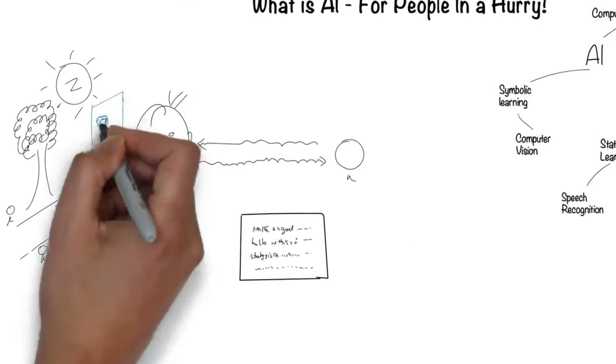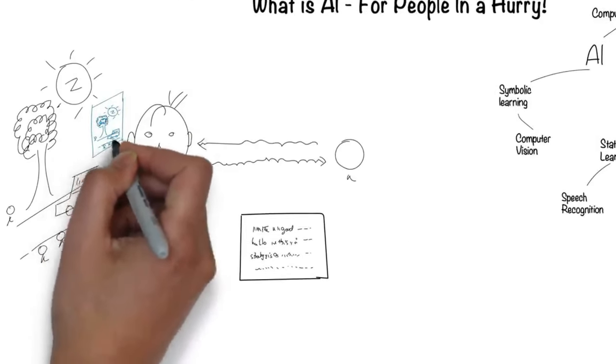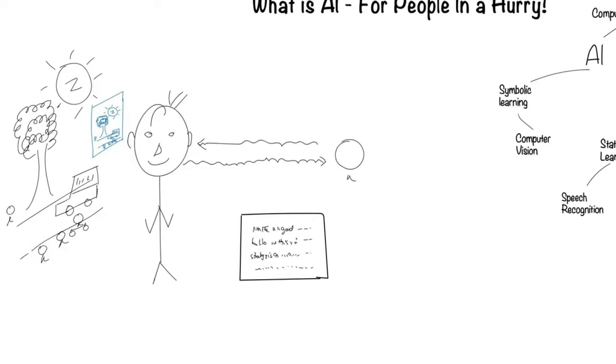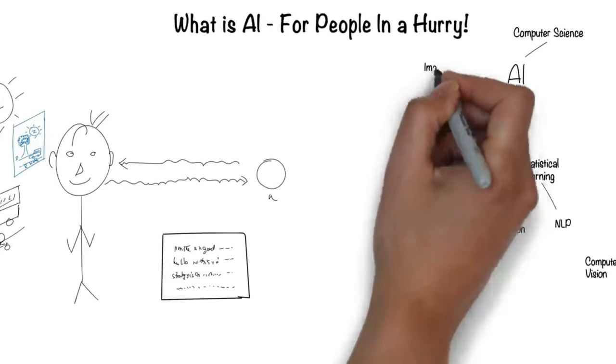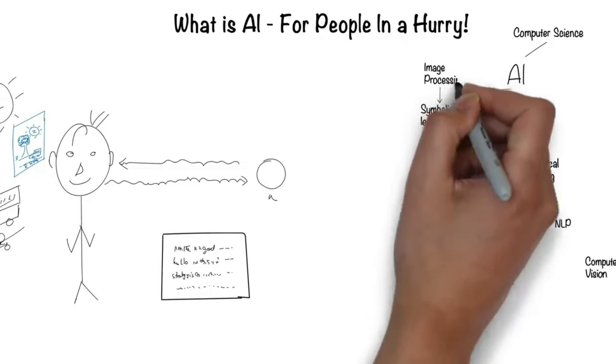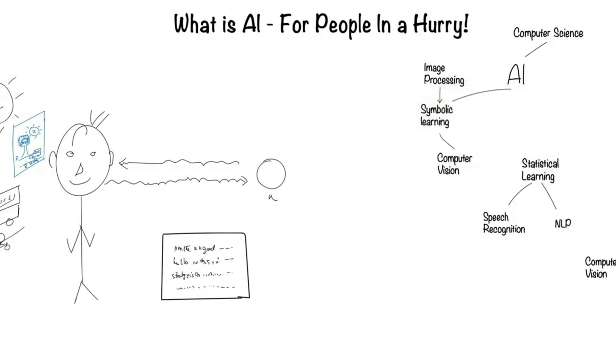Humans recognize the scene around them through their eyes which create images of that world. This field of image processing, which even though is not directly related to AI, is required for computer vision.